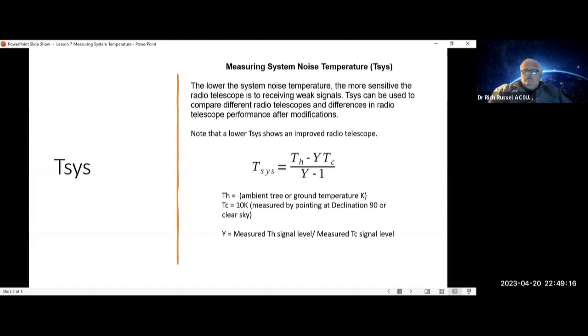The y-factor is when you aim at T-Hot, you measure the signal level, let's assume it's in volts, could be millivolts, as long as it's consistent, and then you take that divided by the measured T-Cold signal level in volts or millivolts.